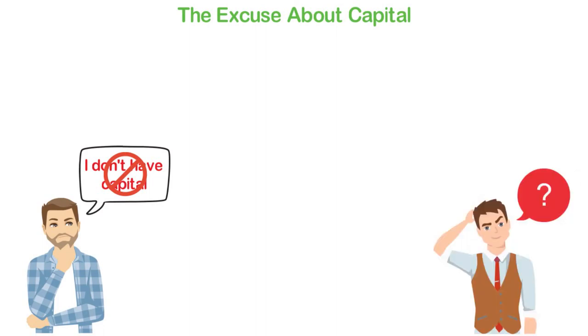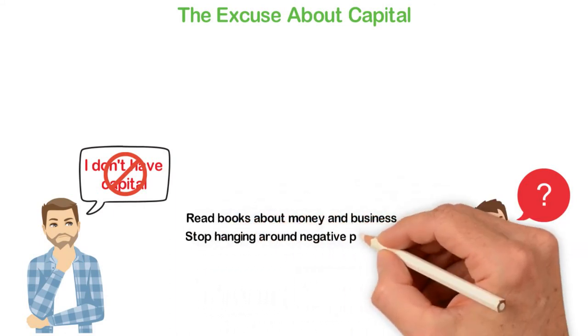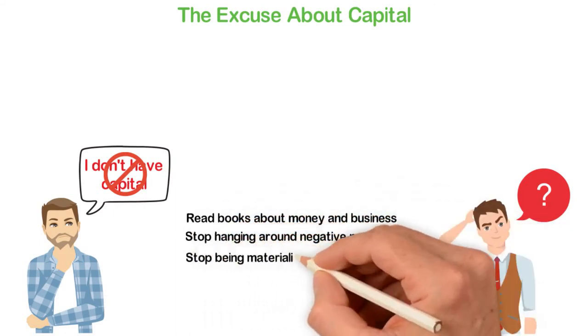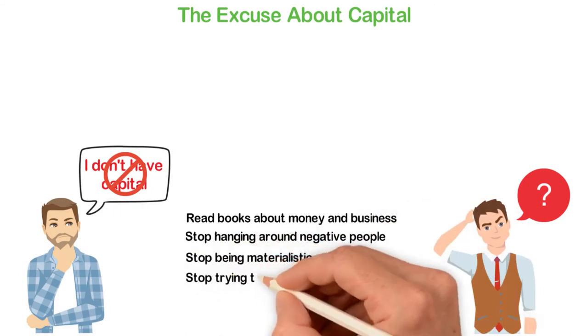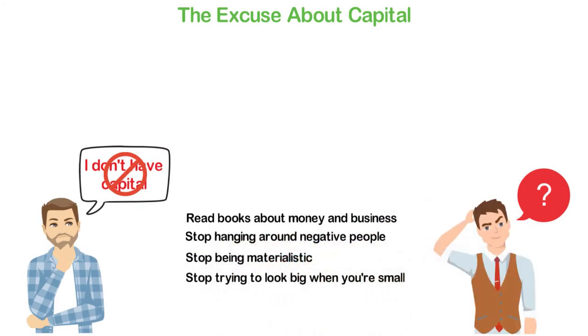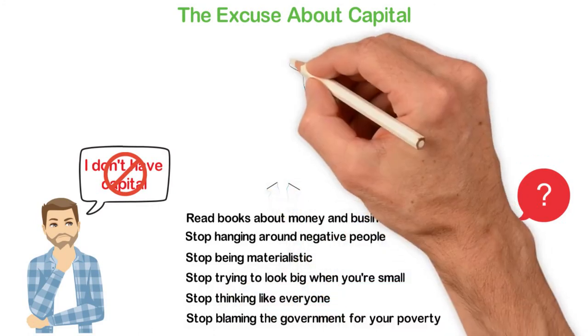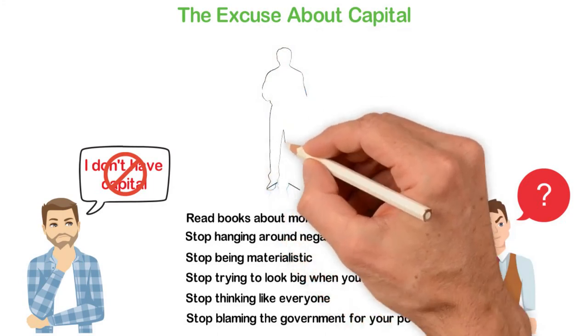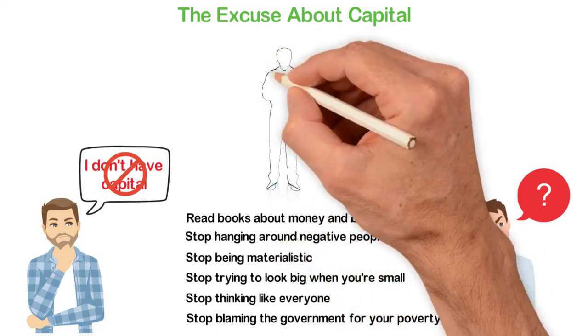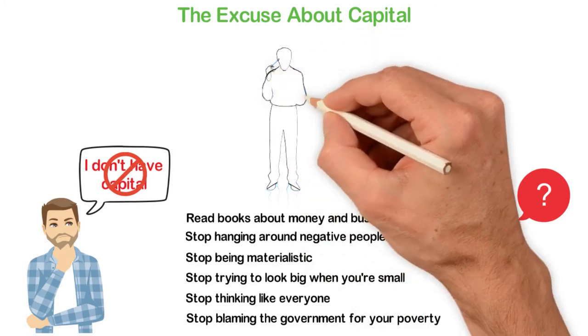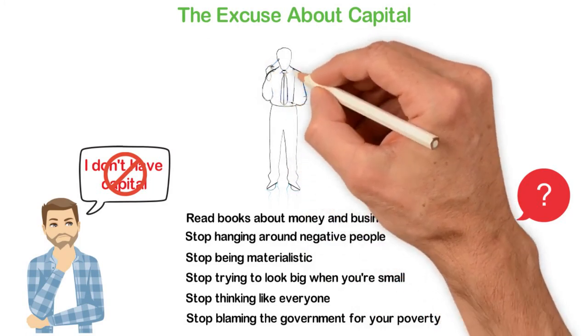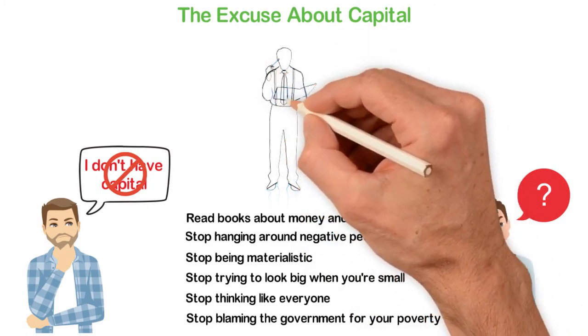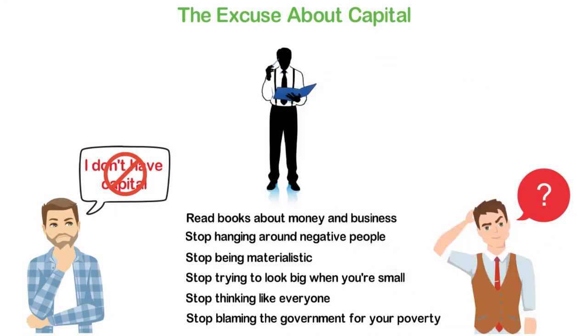How do you become an entrepreneur? Read books about money and business. Stop hanging around negative people. Stop being materialistic. Stop trying to look big when you're small. Stop thinking like everyone. Stop blaming the government for your poverty. Make friends with the positive people who believe that they can change their financial situations and be willing to make sacrifices for a few years. Entrepreneurship is about turning 0 to 100. True entrepreneurs don't complain about the lack of capital.